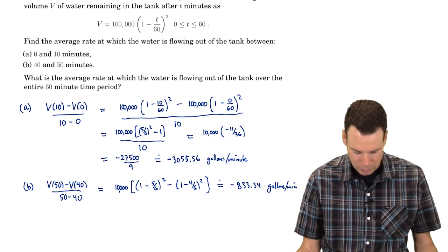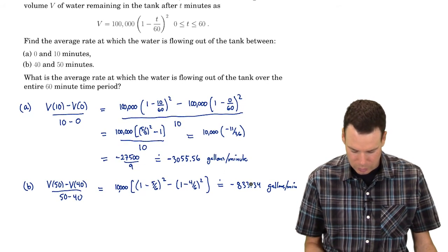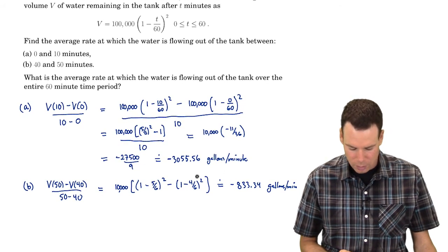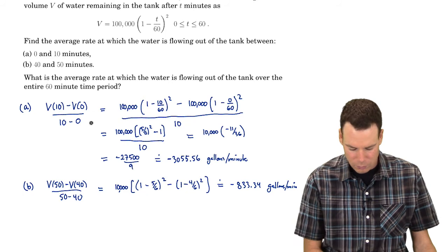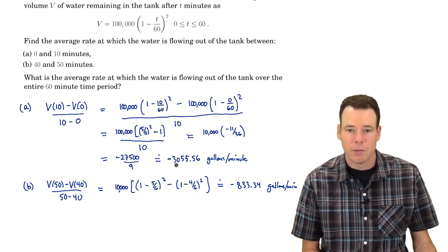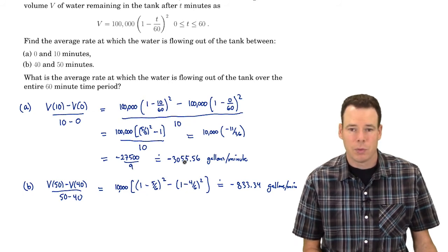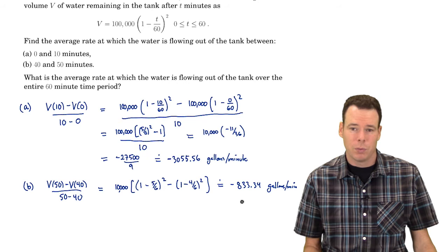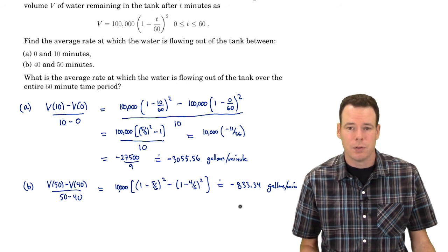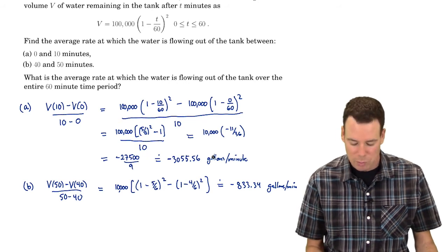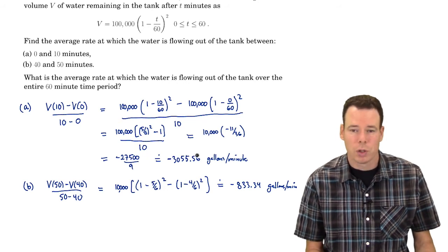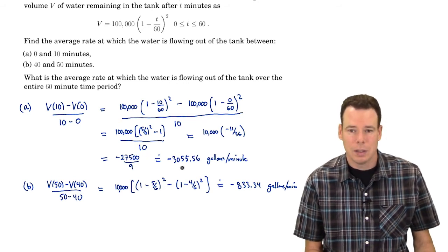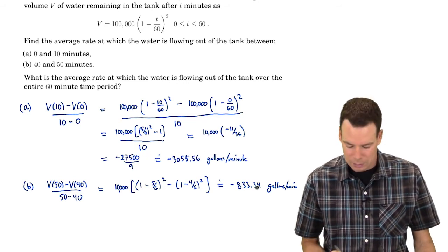We already see something interesting just with these values alone. Over the first ten minutes, we're losing about three thousand gallons per minute, but over the last ten minutes, we're only losing about eight hundred. So it seems to be draining much more quickly at the beginning than at the end.